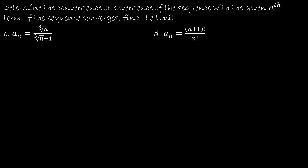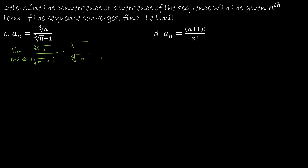Let's take a look at a couple more. For the first one, I'm thinking about the limit as n approaches infinity of the cubed root of n over the cubed root of n plus 1. The first thing I would do is think about direct substitution — both the numerator and denominator would keep getting bigger. That doesn't necessarily mean the limit doesn't exist; it just means I have to outsmart the question. I could think about multiplying by the conjugate — the cubed root of n minus 1 — but we're going to find that's not going to be helpful.